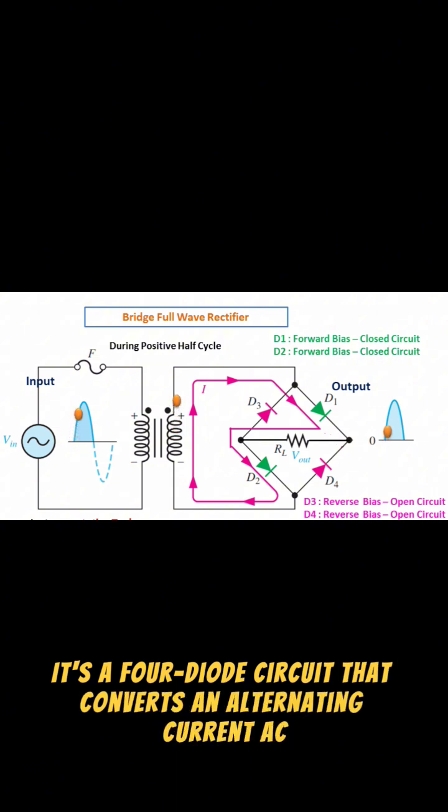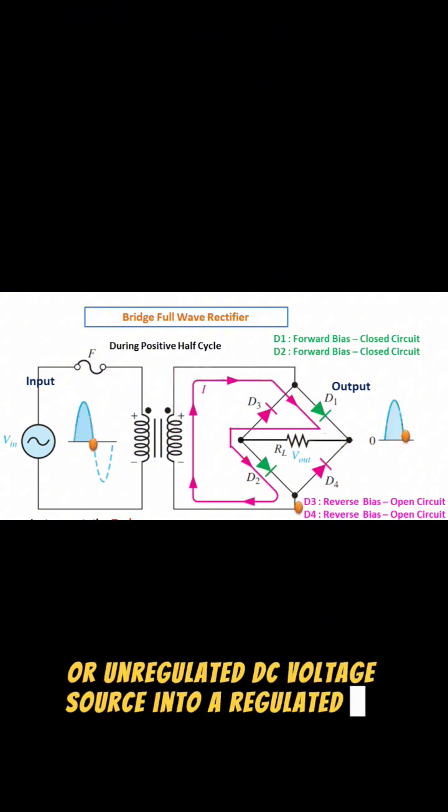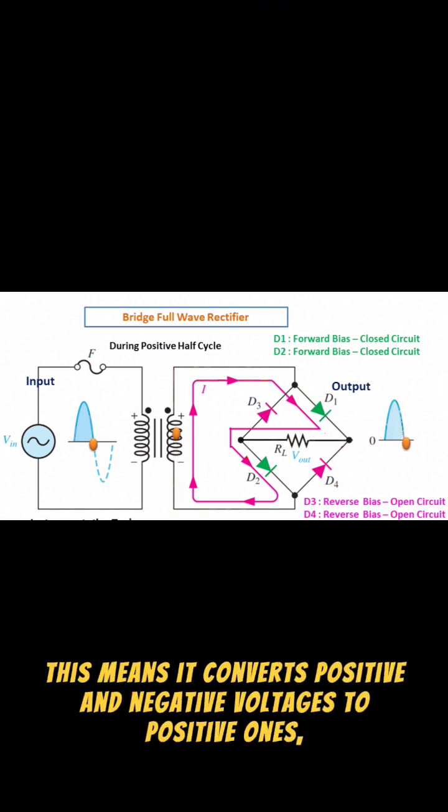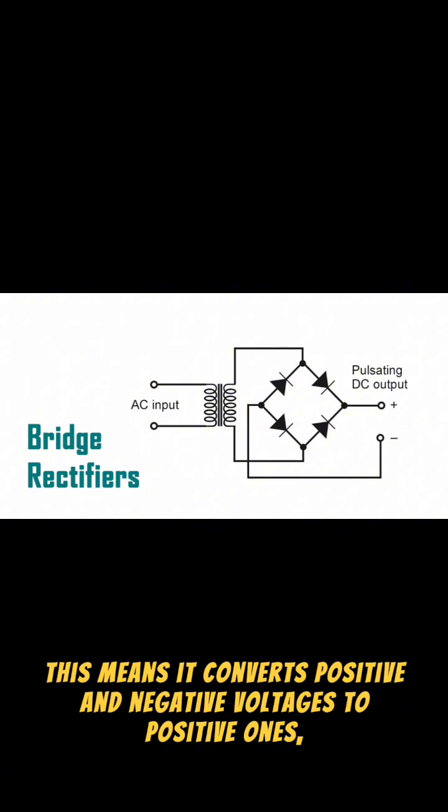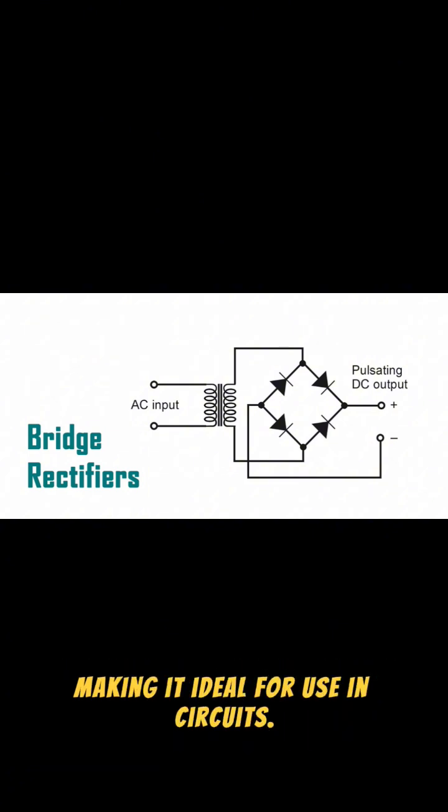It's a four-diode circuit that converts an alternating current AC or unregulated DC voltage source into a regulated DC voltage. This means it converts positive and negative voltages to positive ones, making it ideal for use in circuits.